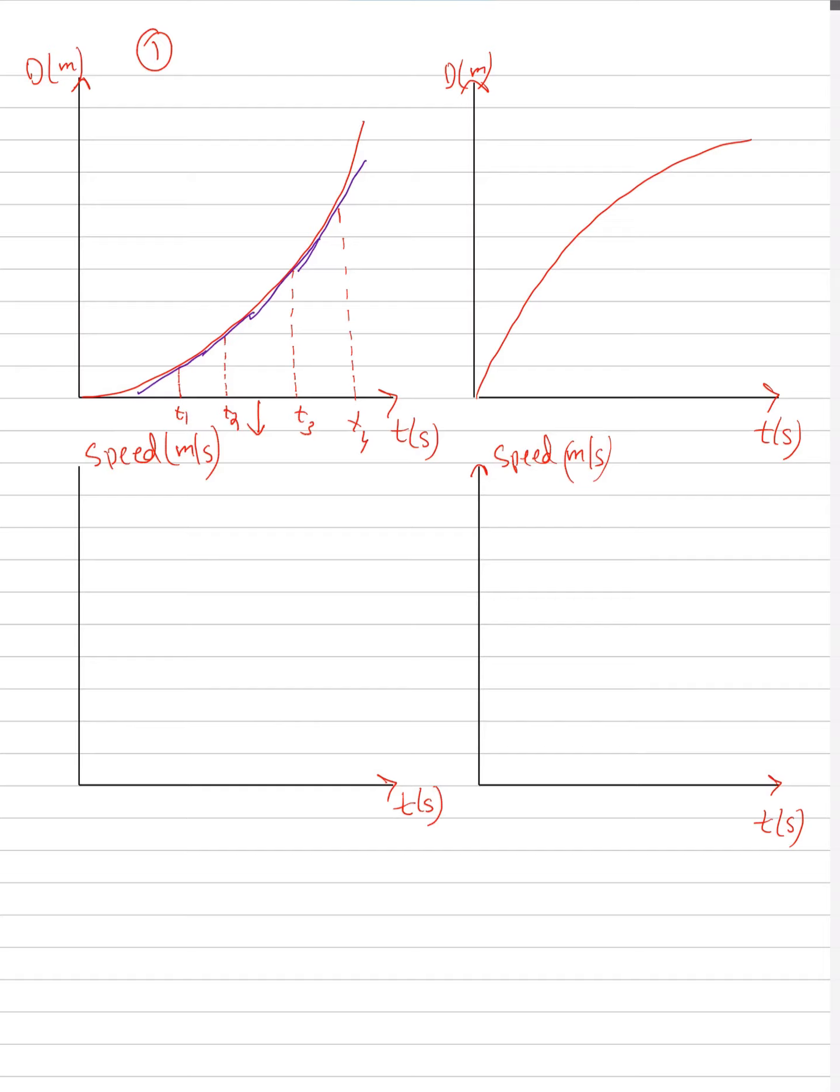Now, as I said earlier, the gradient of distance-time graph gives you speed. Since my gradient is increasing, and here my gradient is equal to speed.